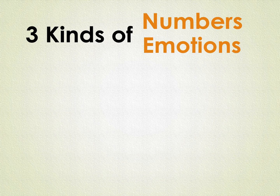The first kind of numbers are the positive numbers. The second kind of numbers are the negative numbers, and the third kind of numbers is simply the number zero, which is the bridge between positive and negative numbers.